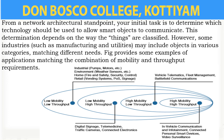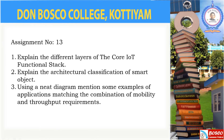If the application requires high mobility and high throughput, then application areas are connected personal smart devices. Some of the assignment questions related to this video are: first, explain the different layers of the core IoT functional stack; second, explain the architectural classification of smart objects; third, using a neat diagram, mention some examples of applications matching the combination of mobility and throughput requirements. Complete the assignment and forward it to the email ID provided to you. Thank you.